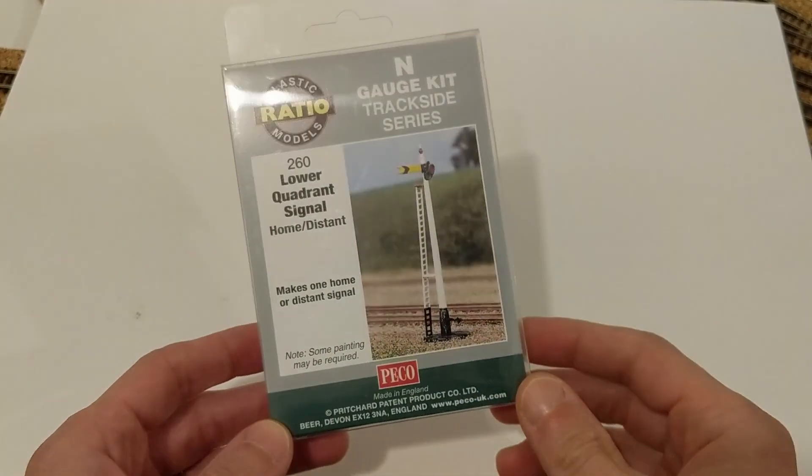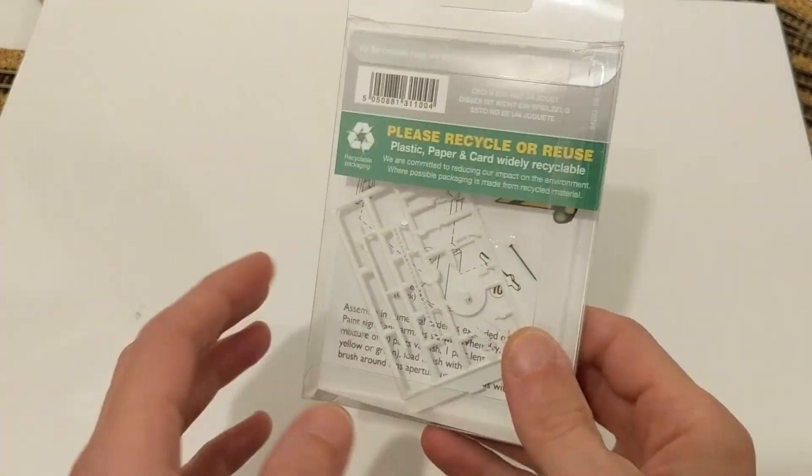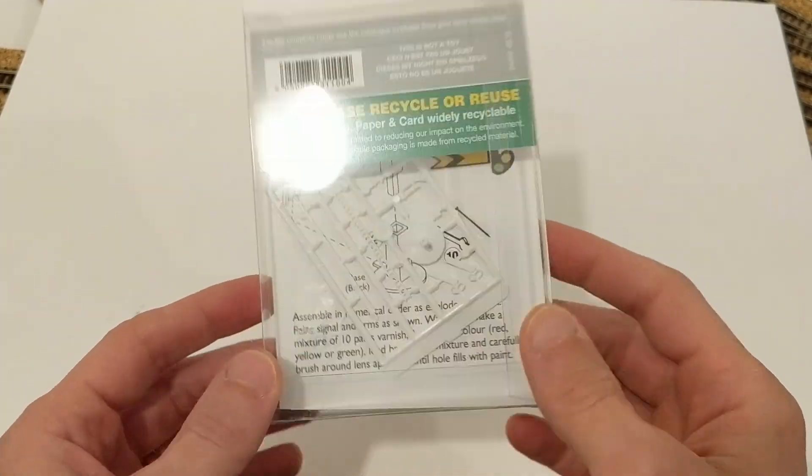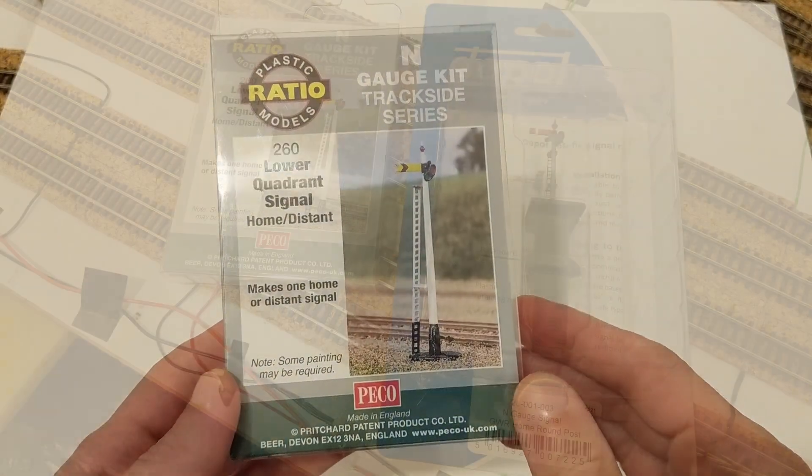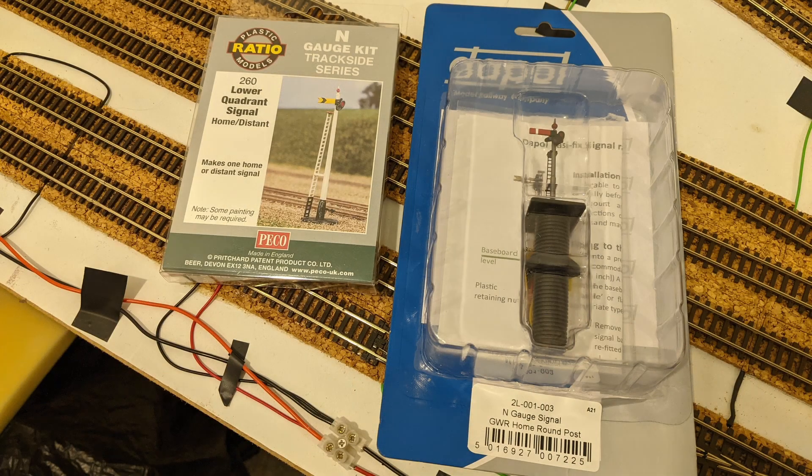Quite a while ago I was thinking about semaphore signals for Endor and decided that I'd like moving signals with an LED. I had a ratio plastic kit, but it looked like adding an LED to it would be beyond my current skills, so I ordered a DAPOL motorised signal.